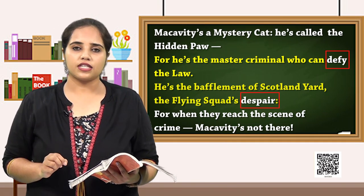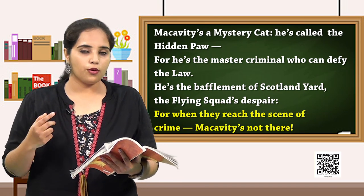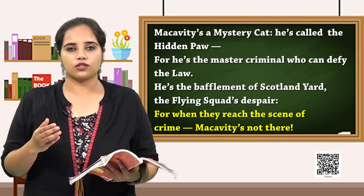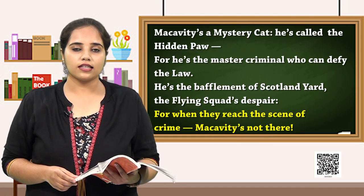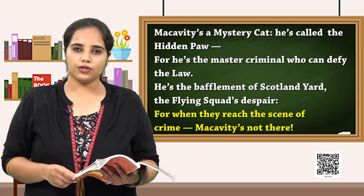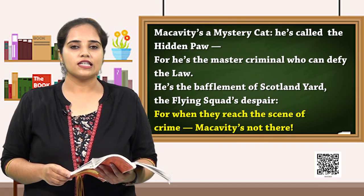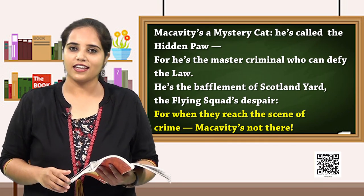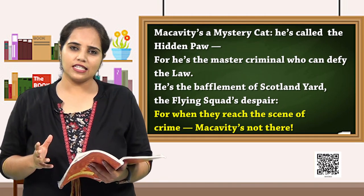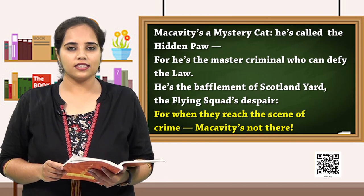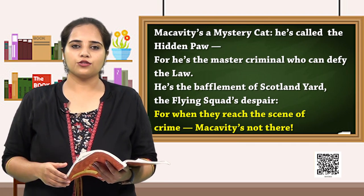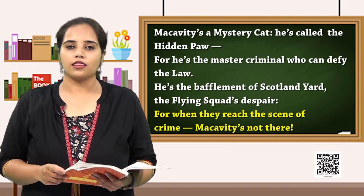If you see the last line of stanza 1, you can know that when the strongest police squads, like Scotland Yard, are at the crime scene, Macavity goes missing — because Macavity knows how to abscond, since he is a mysterious cat. Stay with me students, as the most mysterious part of the Macavity cat is yet to unfold. Now let's move on to stanza 2 in order to know more about Macavity.